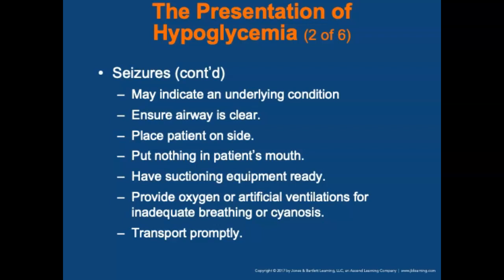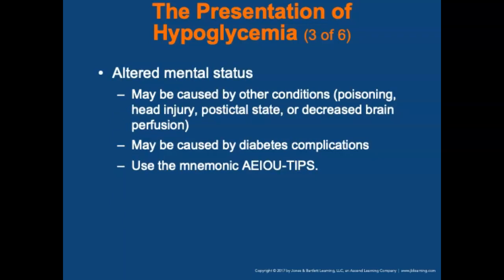Manage the patient's airway and ensure it is clear. Place the patient on their side if there is no cervical spine injury. Do not place anything in the patient's mouth. Have suctioning equipment ready. If the patient is cyanotic or breathing inadequately, provide oxygen or artificial ventilations, and transport properly. Altered mental status may also result from other conditions such as poisoning, head injury, postictal state, or decreased perfusion to the brain. Always suspect and check for low blood sugar in a patient with altered mental status, using the mnemonic AEIOU-TIPS.